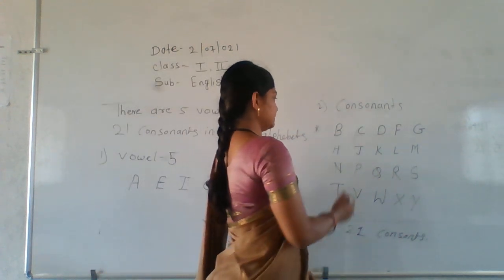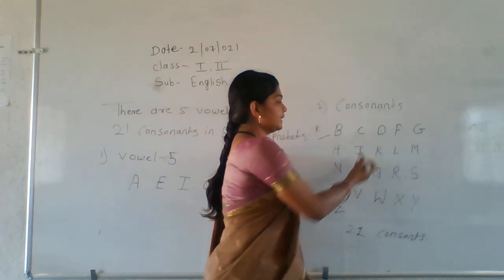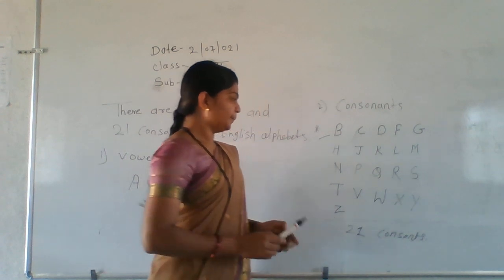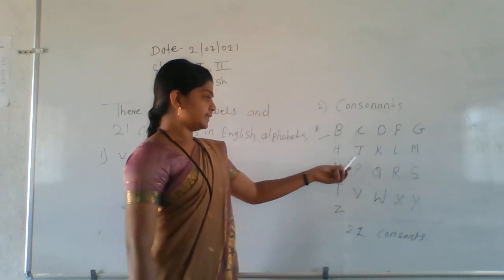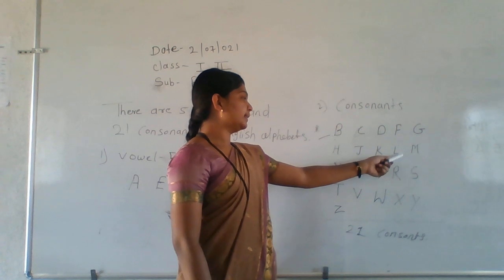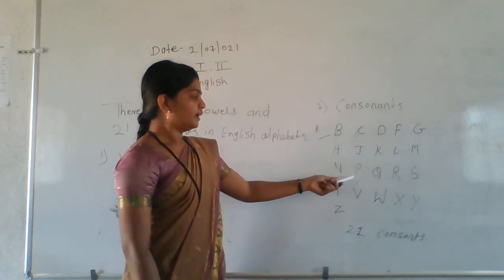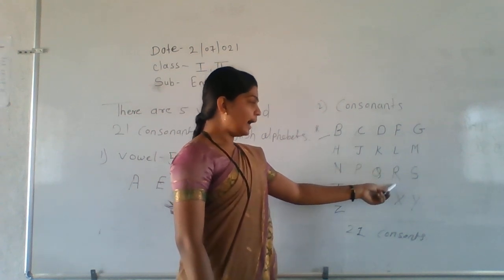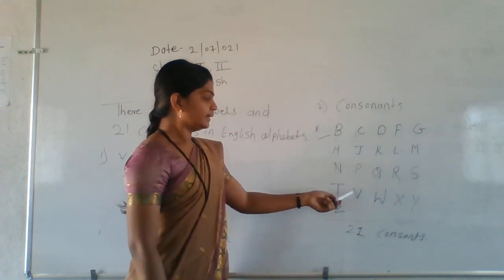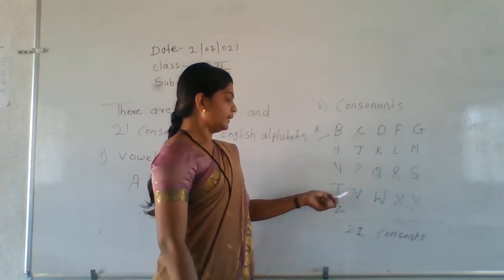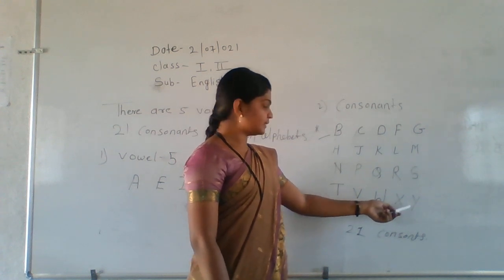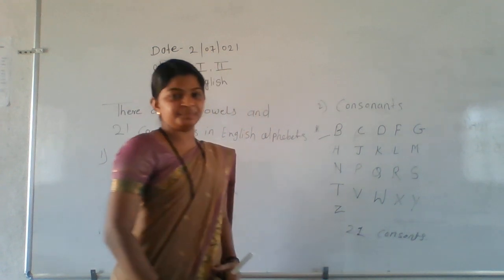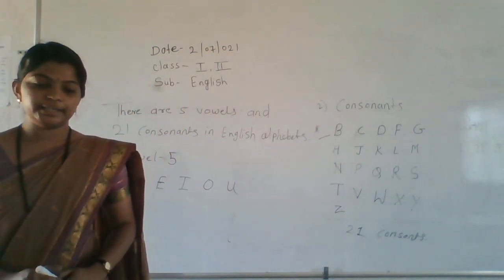Then consonants. B, C, D, F, G, H, J, K, L, M, N, P, Q, R, S, T, V, W, X, Y, Z. There are 21 consonants. You understood that one? Very good.